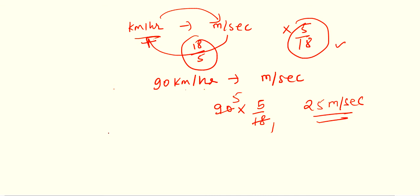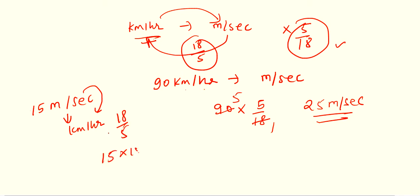Now if you are having 15 meter per second and you want to convert this into kilometer per hour, from meter per second to kilometer per hour we multiply by 18/5. So 15 into 18 divided by 5 — 5 into 15 is 3, 3 into 18 is 54. So 54 kilometer per hour is your required answer.